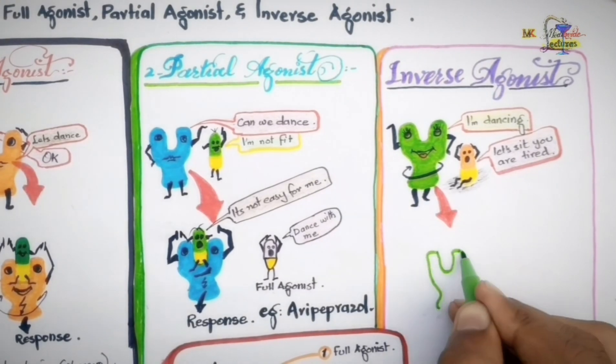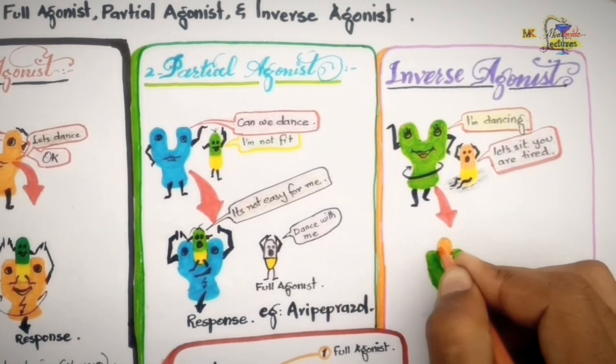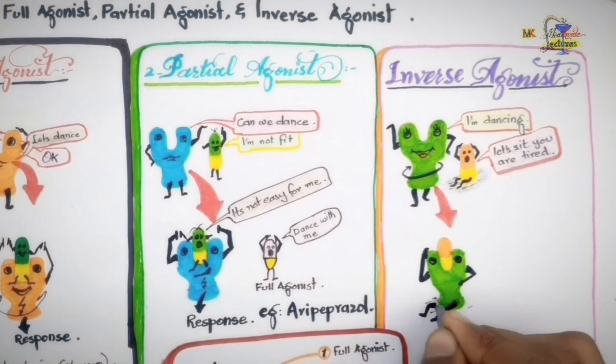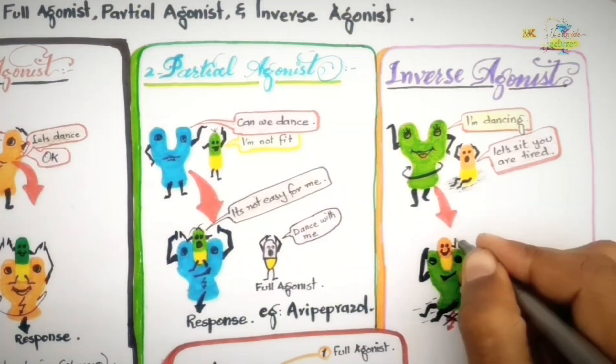And thus, the inverse agonist succeeds to bring back the receptor into its inactive state. And thus, it diminishes its constitutive activity.